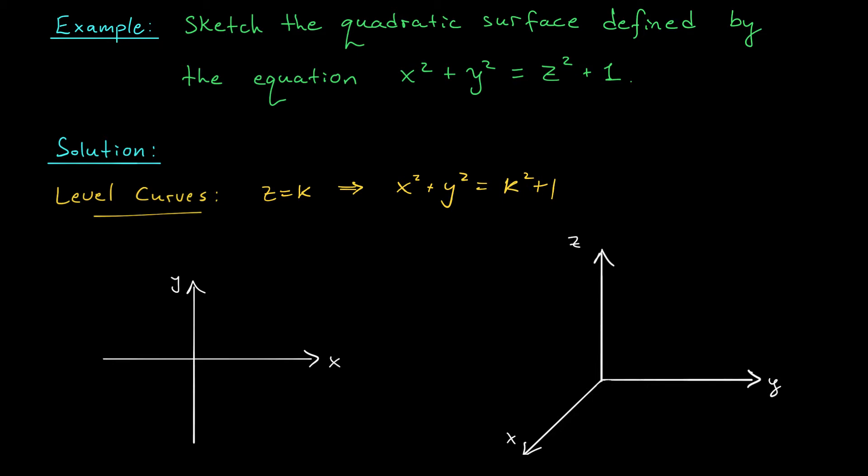A circle in the x, y plane. I could rewrite the right-hand side as the square root of k² + 1 squared. So this circle is centered at the origin and has radius √(k² + 1).